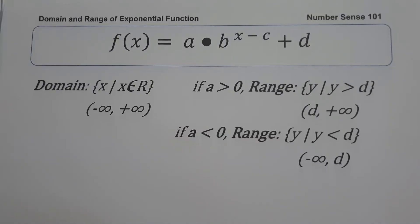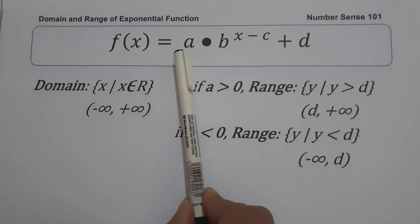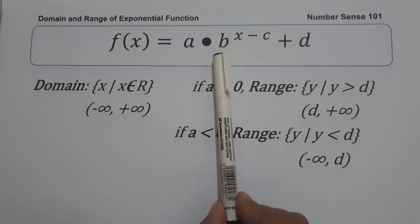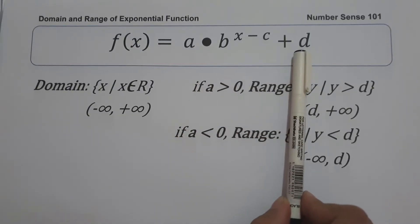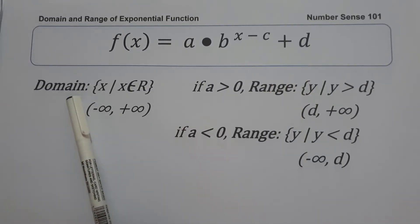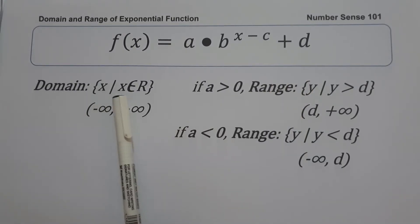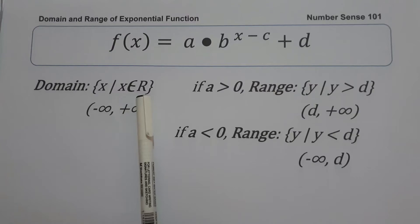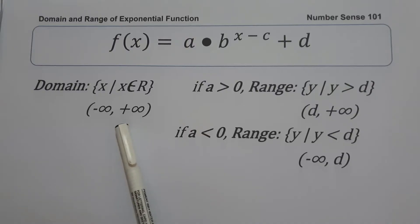If the given function is written in the form f(x) = a times b raised to x minus c plus d, where d is the horizontal asymptote, the domain is the set of x values such that x is the set of all real numbers, or in interval notation, from negative infinity up to positive infinity.